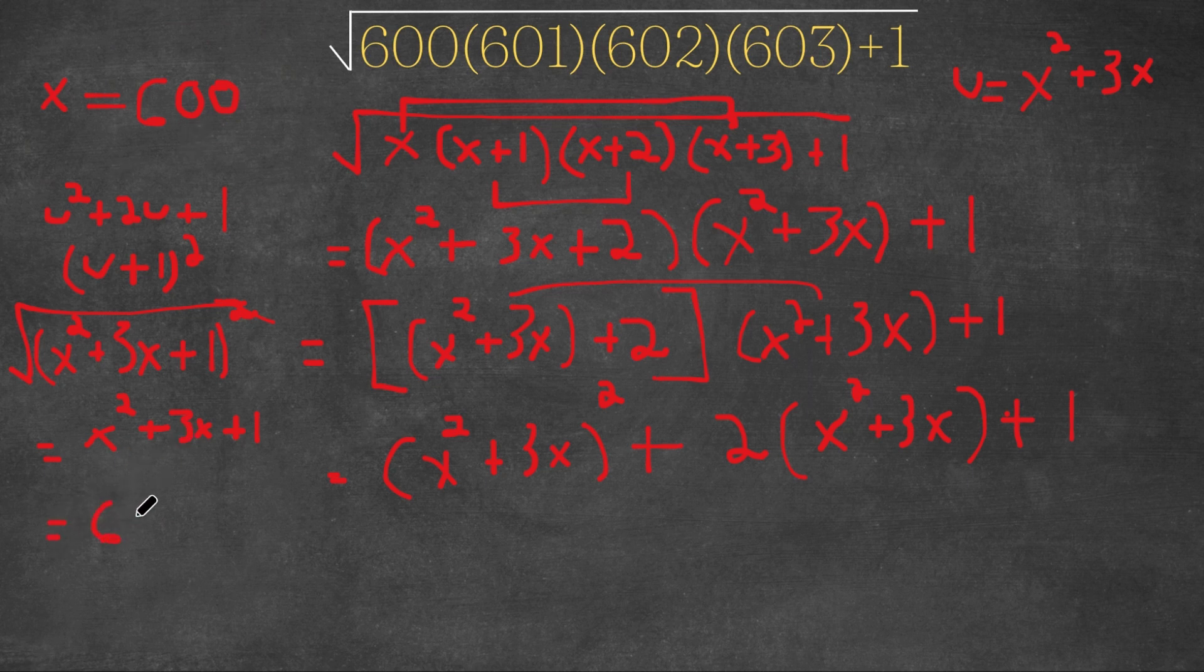So this would equal 600 squared plus 3 times 600 plus 1. Now, 600 squared, this is 36 with 4 zeros. So 360,000 plus 3 times 600 is 1,800. And we still have our plus 1. And this equals, well, 360,000 plus 1,800 is 361,800. And if we add our 1, we get 361,801. So this would be our final answer. And we didn't even use a calculator to solve this.